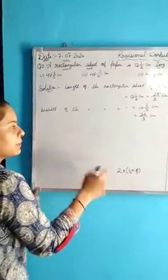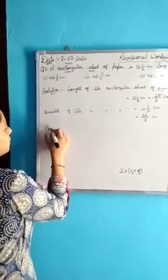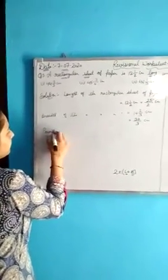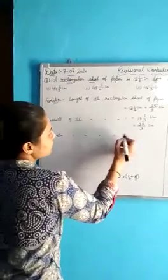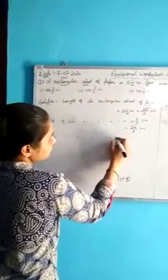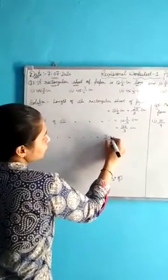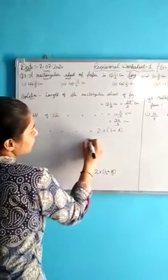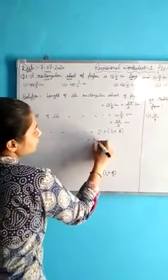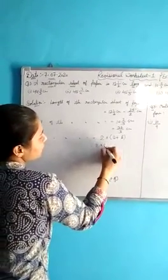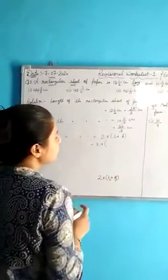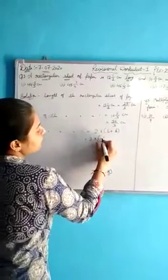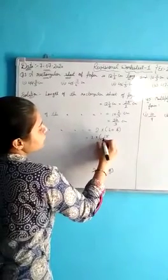To find the perimeter, write down: perimeter of the rectangular sheet will be 2 into (l + b). That is 2 into the value of length, which is 25/2, plus the value of breadth, which is 32/3.